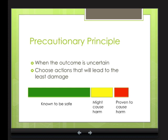The precautionary principle is stated a lot of different ways, but it really boils down to: when the outcome is uncertain, choose actions that will lead to the least damage. A real big piece of this is uncertainty. If something is known to be safe, there's a range where it's known to be safe. There's also a range where an environmental stress — like a toxin or too much heat — is proven to cause harm. And then there's a region in between where it might cause harm or it might not. You really don't know, and this is where you need to take precaution.